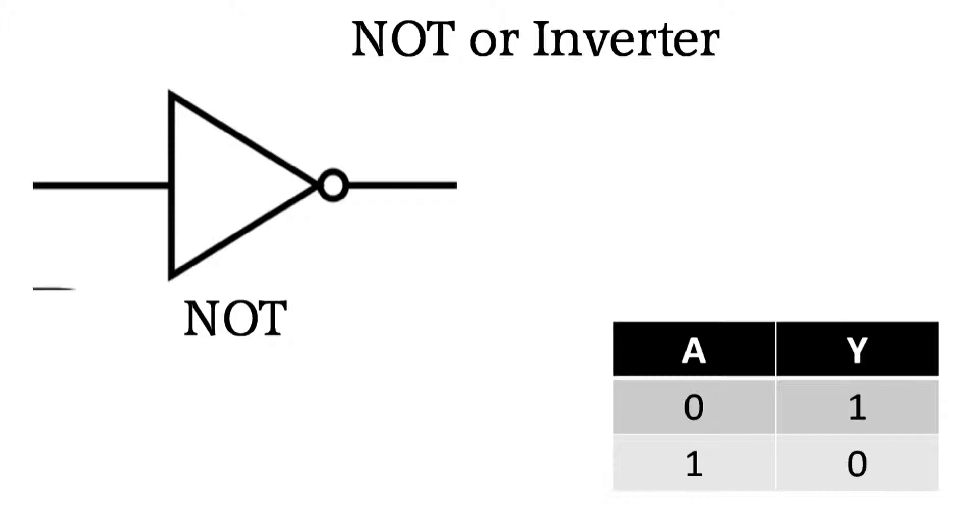One more basic gate is NOT. It just inverts the input. It has single input. If you give 0 as input you will get 1 as output. If you give 1 as input you will get 0 as output. That's why it is also called inverter.